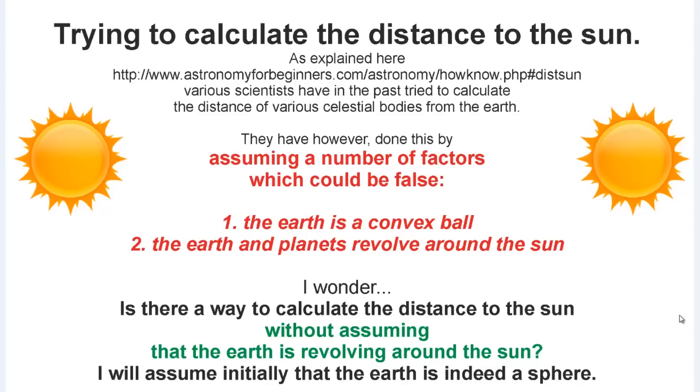One, the Earth is a convex ball, and two, the Earth and planets revolve around the Sun. I could add a third that the light travels in straight lines. So I wonder, is there a way to calculate the distance to the Sun without assuming that the Earth is revolving around the Sun? I would assume initially that the Earth is indeed the sphere.